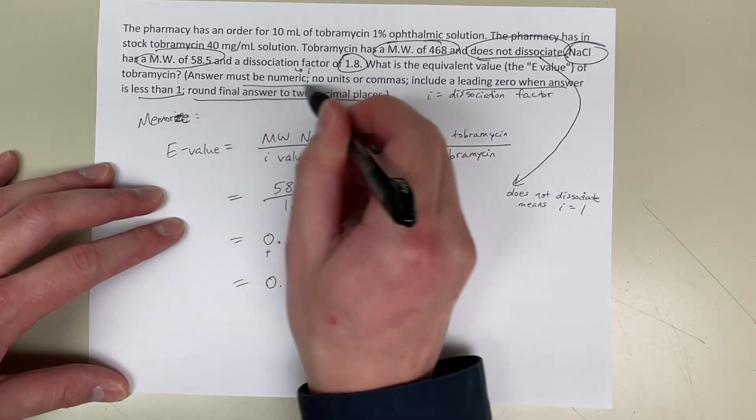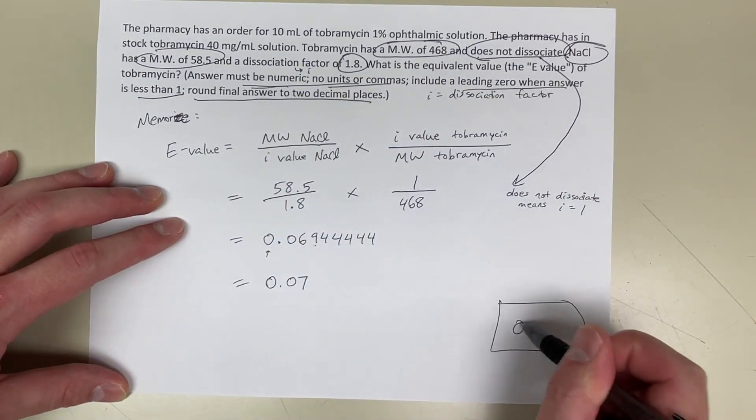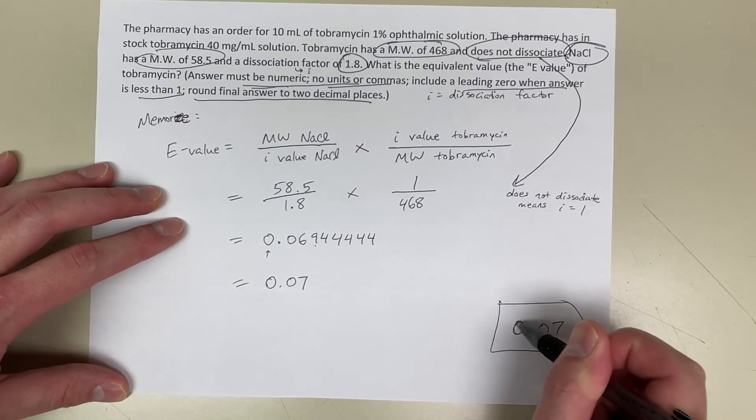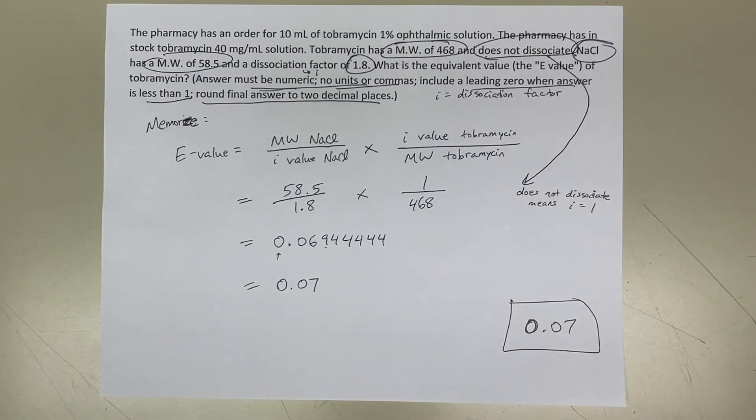The answer must be numeric with no units or commas. So in the computer you just type in 0.07, and that's your final answer. If you have any questions, please leave it in the comments. Thank you.